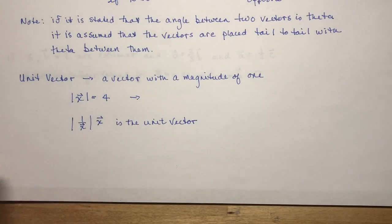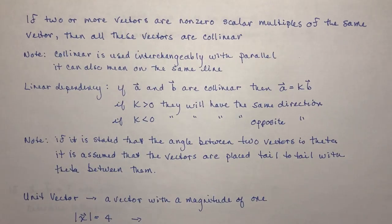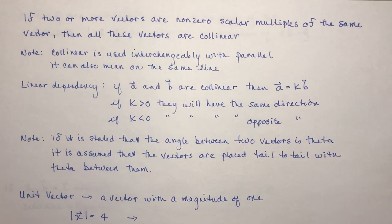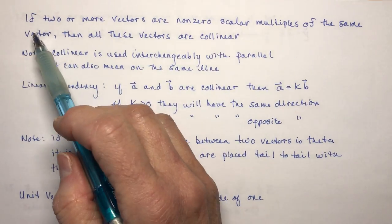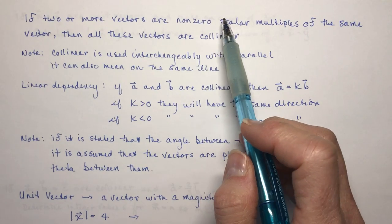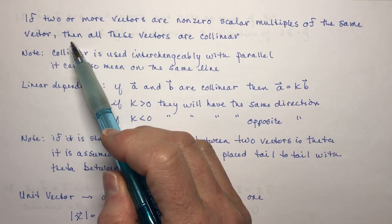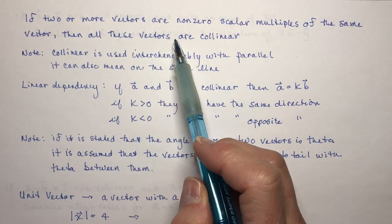So some more words — there are so many words in this lesson. You have to understand what they're talking about. If two or more vectors are non-zero scalar multiples of the same vector, then all these vectors are collinear.